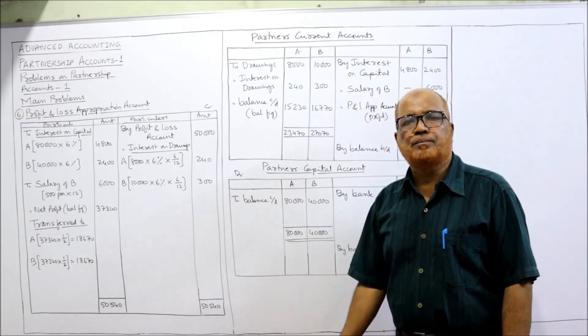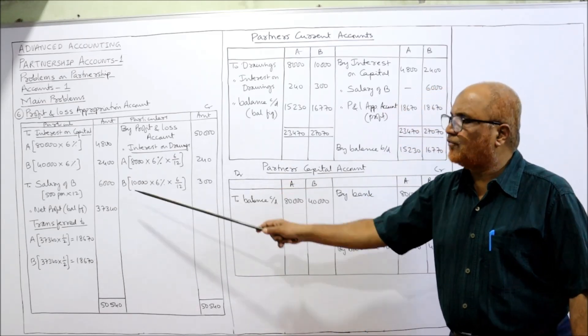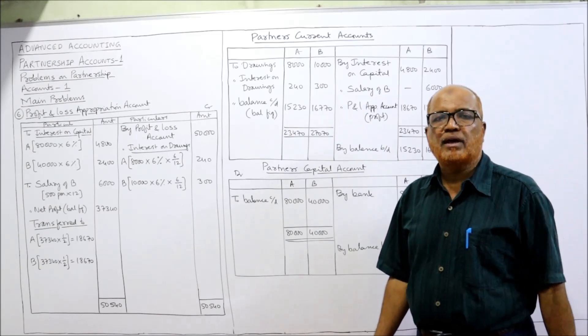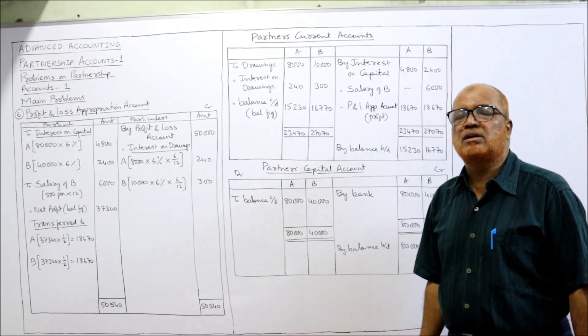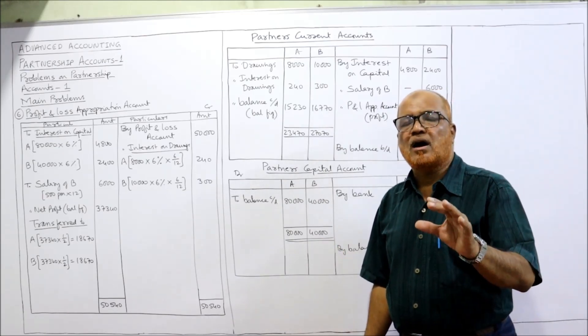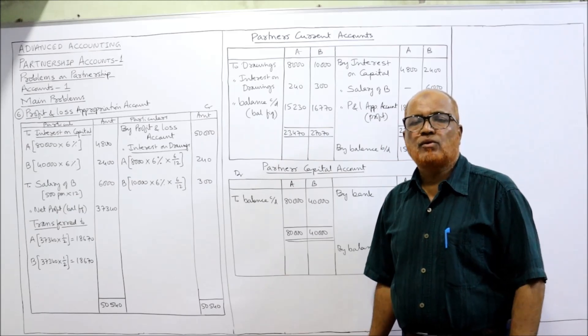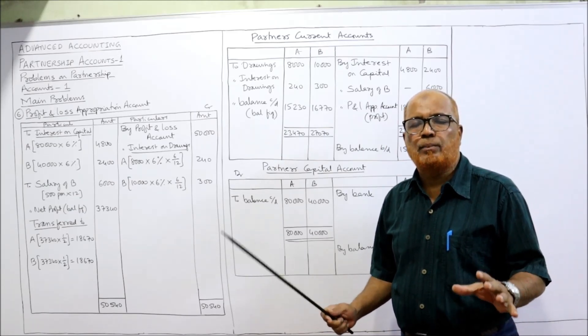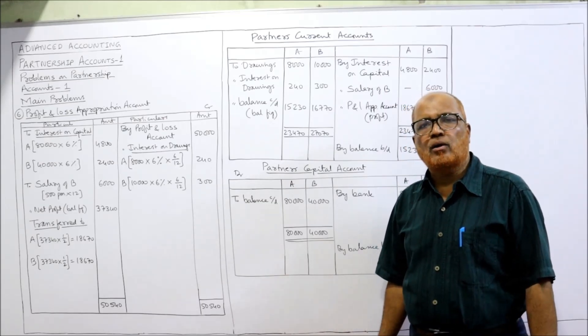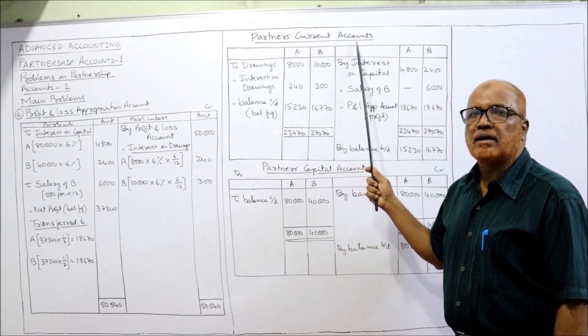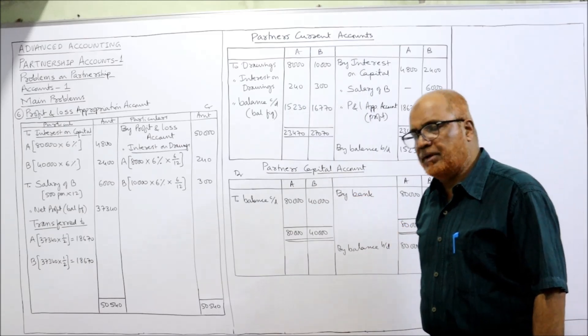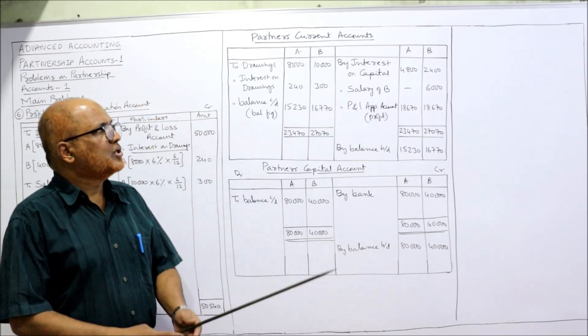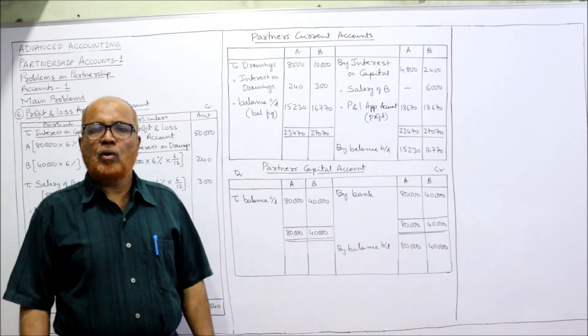This is the end of profit and loss appropriation account. Now we have to make the current account of the partners because it is given that capitals are fixed, so we will not adjust the capital. All adjustments will be done in a new account called current account. So this is the current account, partners current account A and B: two columns on debit side and two columns on credit side.